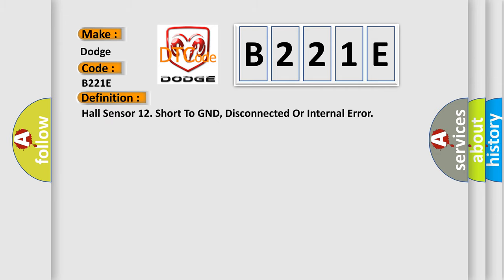The basic definition is Hall sensor 12 short to GND, disconnected or internal error. And now this is a short description of this DTC code.